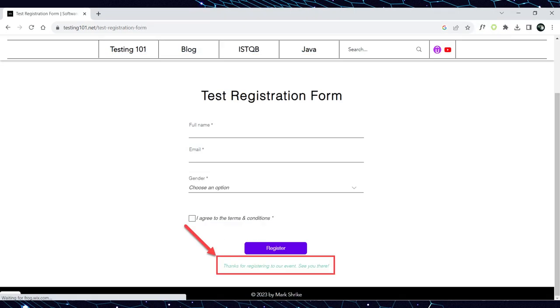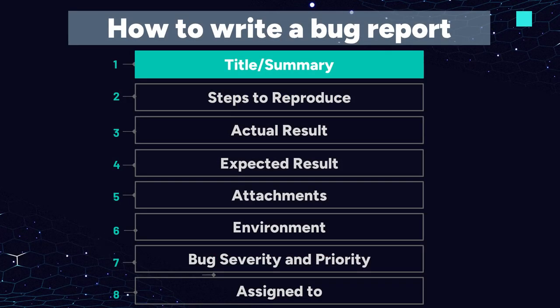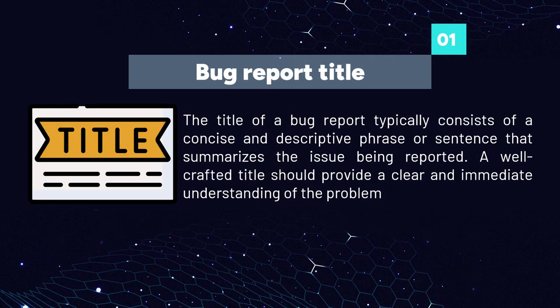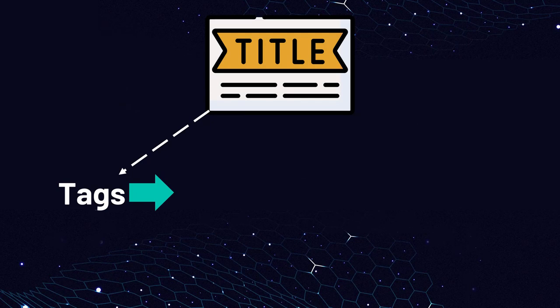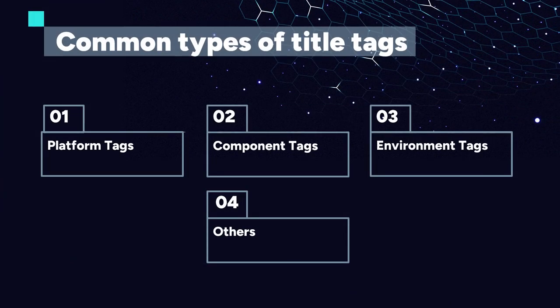The first component that must be included in the bug report is the title or summary. Writing a clear and effective title is crucial because it's the first thing developers see and can significantly impact how quickly they understand the issue. The title of a bug report typically consists of a concise and descriptive phrase or sentence that summarizes the issue being reported. A well-crafted title should provide a clear and immediate understanding of the problem. The first element that should be included at the beginning of the bug report title is tags. In bug tracking systems like Jira, tags are often used to categorize and organize bug reports, providing additional context and metadata. Title tags aid in efficient searching, filtering and management of bug reports.